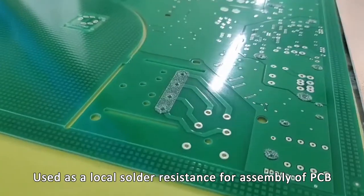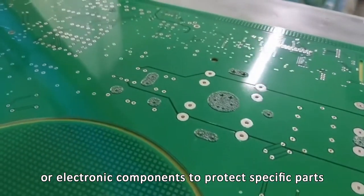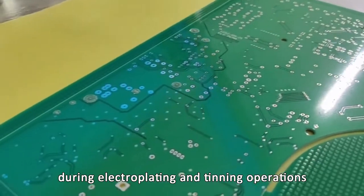It's used as a local solder resistance for assembly of PCB or electronic components to protect specific parts of the circuit board during electroplating and tin operations.